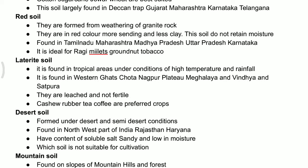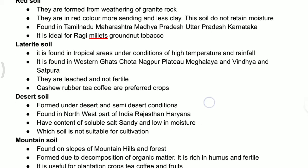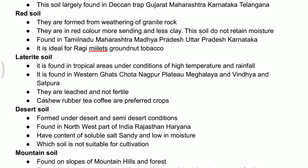Laterite soil is found in tropical areas under conditions of high temperature and high rainfall. Where there is high rainfall and high temperature — a tropical condition — there is laterite soil. Laterite soil is created because of leaching action. Leaching action is the erosion where the topmost layer of the earth gets eroded away and deposited somewhere, leading to the creation of flat laterite surfaces.